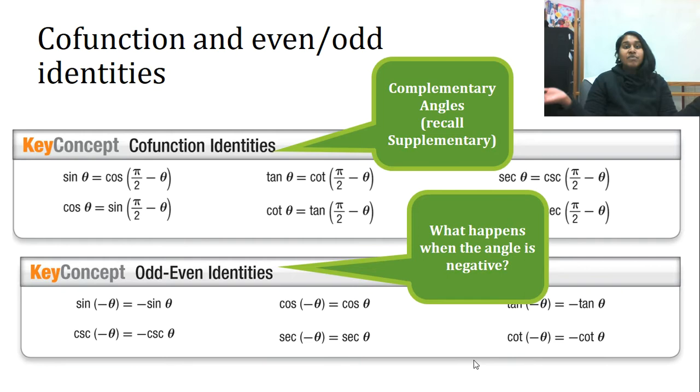And recall that complementary angles are something that, two angles that add up to that 90 degrees, whereas supplementary angles are two angles that add up to that 180 degrees.